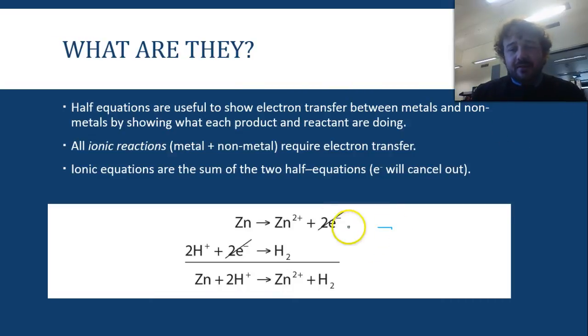So, here we have two half equations, and here we have an ionic equation. So, zinc on the reactant side is just zinc, alright, but then it reacts. And when it does that, it gives away its two electrons. It gives away its two electrons, and there we go.